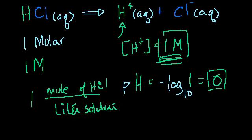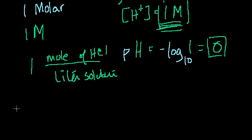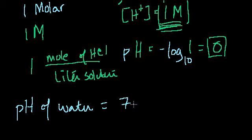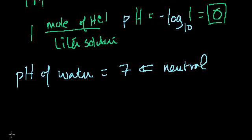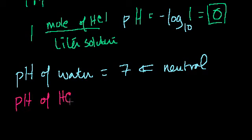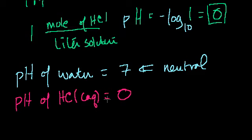So if you have one molar of hydrochloric acid in aqueous solution, you get a pH of 0. Water's neutral pH was 7. The pH of one molar HCl in water is 0. A low pH means more acidic, and now let's figure out what the pOH of hydrochloric acid is.